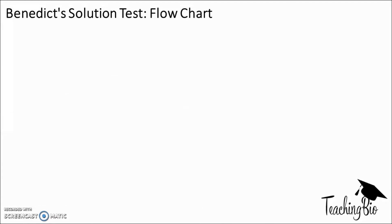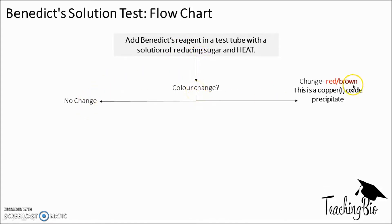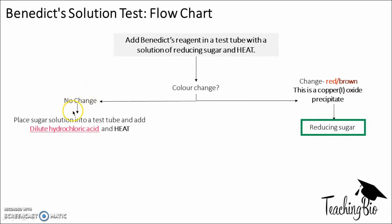The Benedict's solution can also be used with other reactions to see whether something is even a non-reducing sugar. We add Benedict's and heat to the solution and observe any colour change. If there's no colour change we can't immediately assume it's not a sugar at all - it could be a non-reducing sugar. What we do then is place the solution into a test tube and add dilute hydrochloric acid and heat it again.